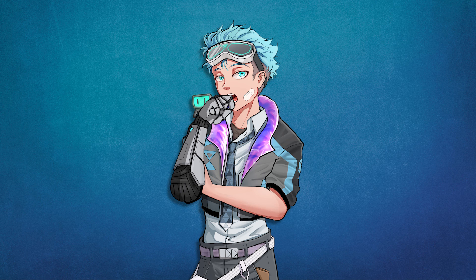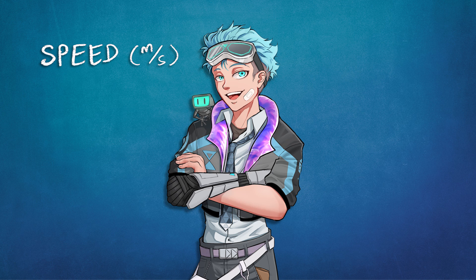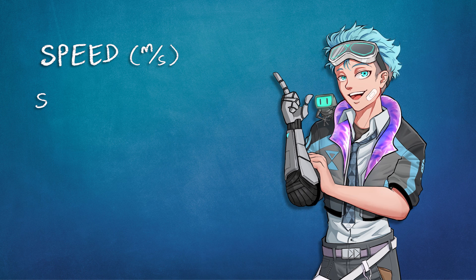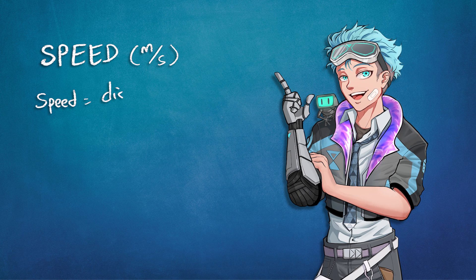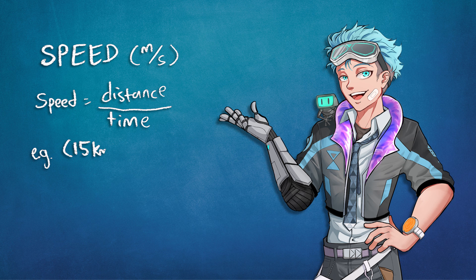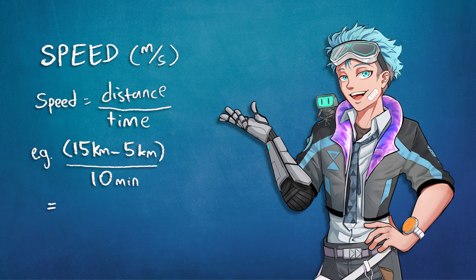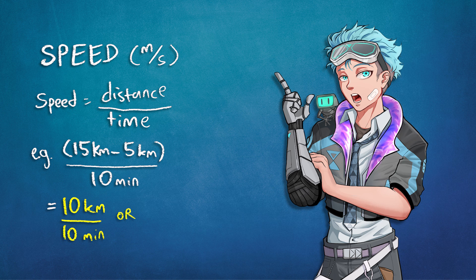A common quantity for how fast something is going is the speed, and the SI unit is meters per second. Speed is simply distance traveled over time taken. You move from kilometer 5 to kilometer 15 on the highway in 10 minutes — that means your car is going 10 kilometers every 10 minutes, or 16 kilometers an hour, or 16.67 meters a second.